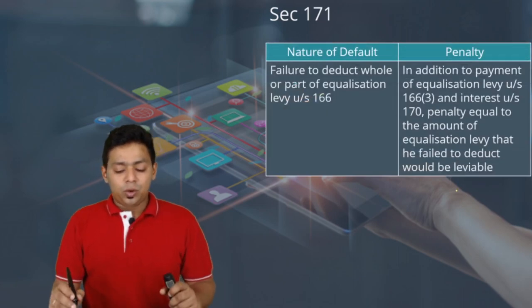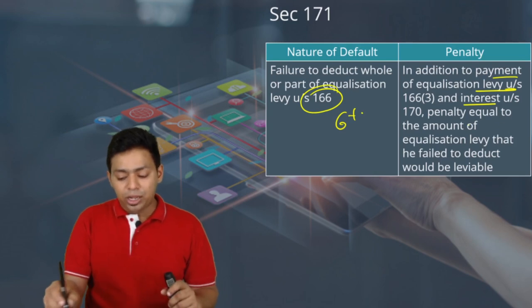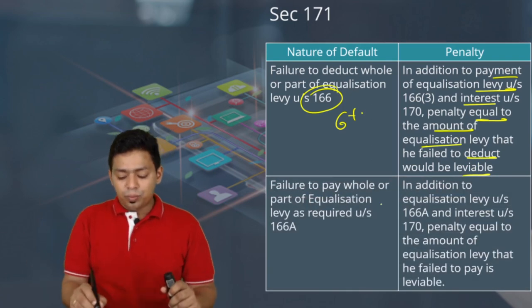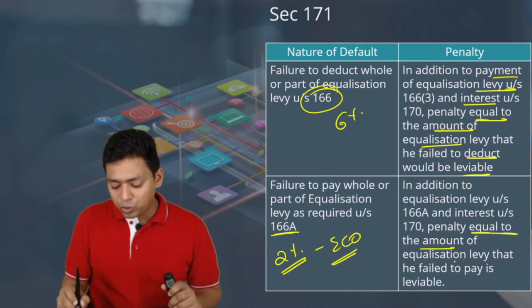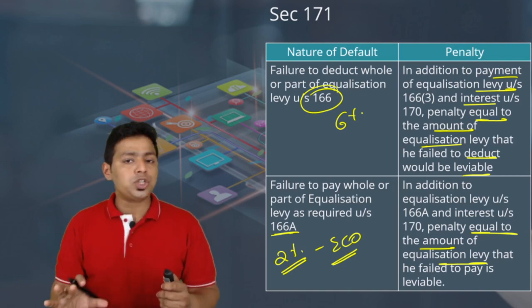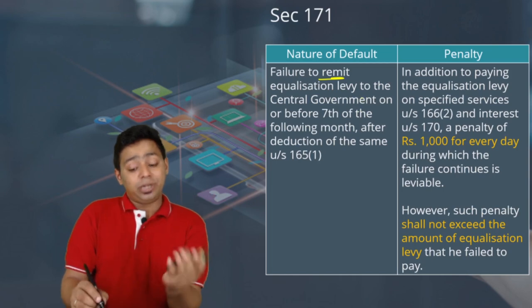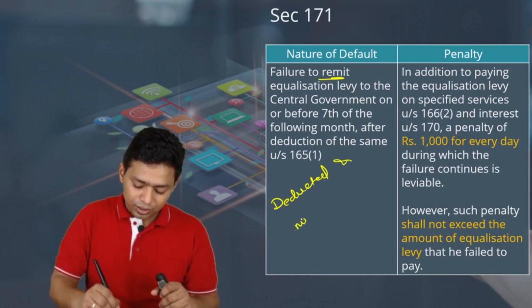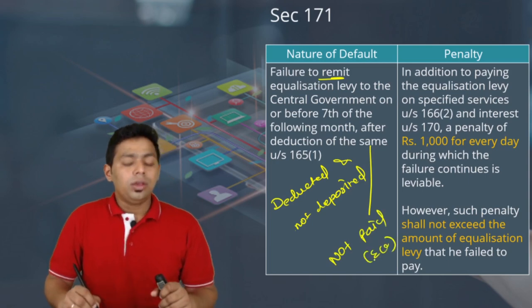A penalty of 1,000 rupees per day applies for failure to deduct or pay equalization levy. For failure to deduct the whole or part of equalization levy under Section 166 (6 percent), in addition to the equalization levy and interest, a penalty equal to the amount of equalization levy that was failed to be deducted is leviable. Similarly, for failure to pay under Section 166A (2 percent e-commerce operator), penalty equal to the equalization levy applies — same as TDS provisions.